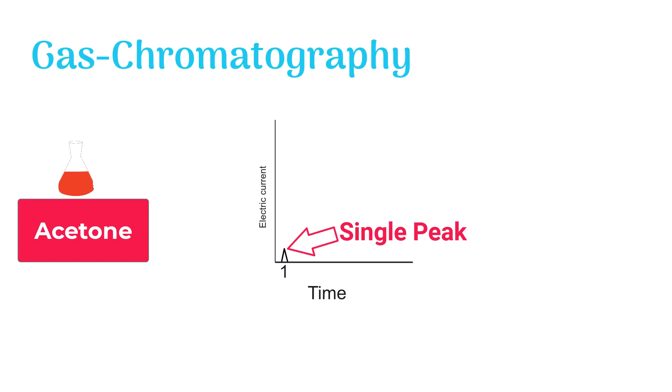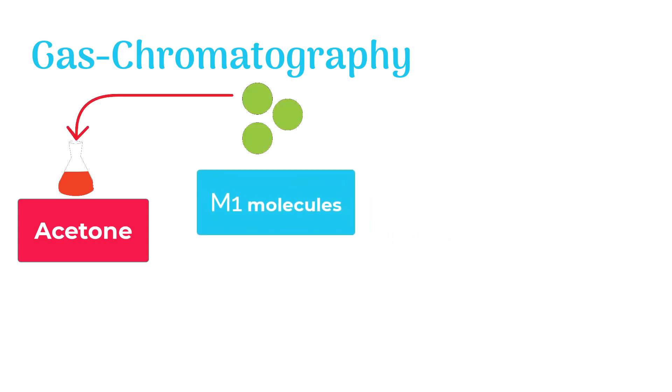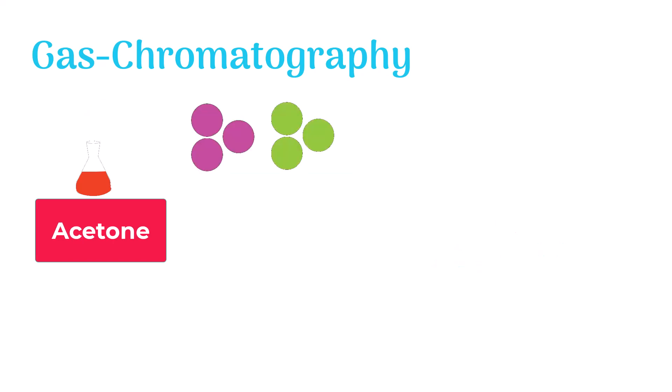Now we add a sample of M1 molecules in acetone and run the chromatography. We receive two peaks this time. One at time 1 minute and the other at time 3 minutes. The first peak represents acetone molecules and the second one represents M1 molecules.